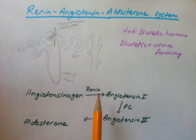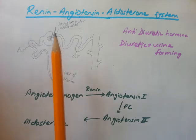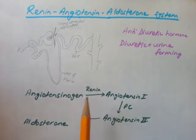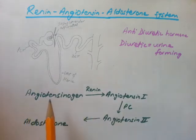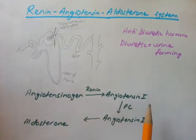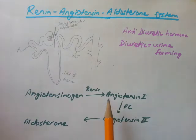When the juxtaglomerular apparatus senses that blood volume is low, it releases the hormone renin. This renin converts an inactive blood hormone — angiotensinogen, which is always present in the blood in inactive form — into angiotensin I.